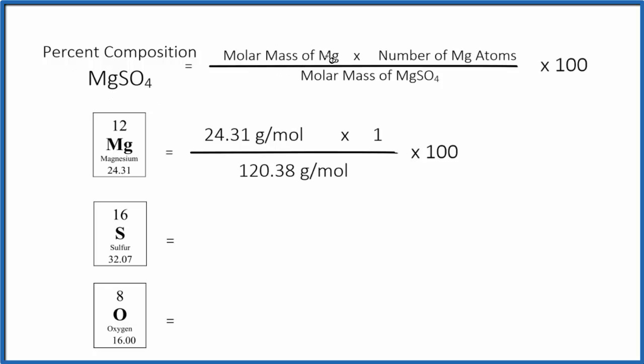Take the molar mass of magnesium, that's right here, 24.31 grams per mole. We multiply that by the number of atoms, the number of magnesium atoms. There is only one. Then we divide all of this by the molar mass of MgSO4. That's 120.38 grams per mole.